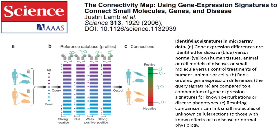The connectivity score is calculated by comparing the query set against a reference set. A positive connectivity score is given if the upregulated genes in the query set are near the top of the reference set and the downregulated genes in the query set are near the bottom of the reference set, and vice versa for a negative connectivity score. This process is repeated for each reference set to get a connectivity score for each drug in the database with the query disease, and then they are ranked accordingly. Those drugs at the bottom are considered as potential therapeutics for the disease, since they could potentially revert the disease gene expression profile back to its normal state.